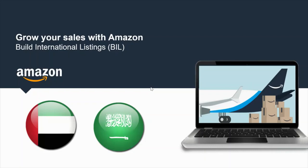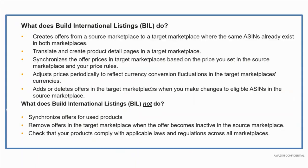Once you've completed registration, your next step is going to be building international listings using our BIL tool. What the BIL tool does is create offers from a source marketplace to a target marketplace where the same ASINs already exist in both marketplaces.